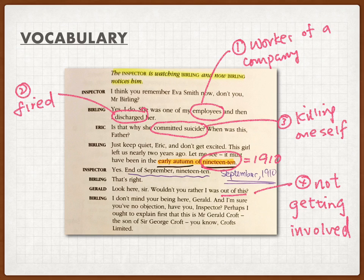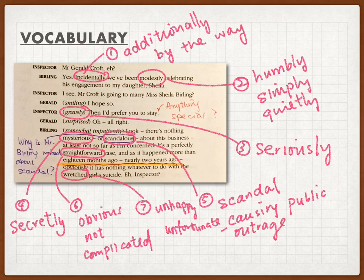Number four, 'out of this.' When the inspector started asking Mr. Berlin questions, Gerald asked whether he should be out of this — it means whether he should be involved or not. So getting out of this means not getting involved. Let's continue on page 13.